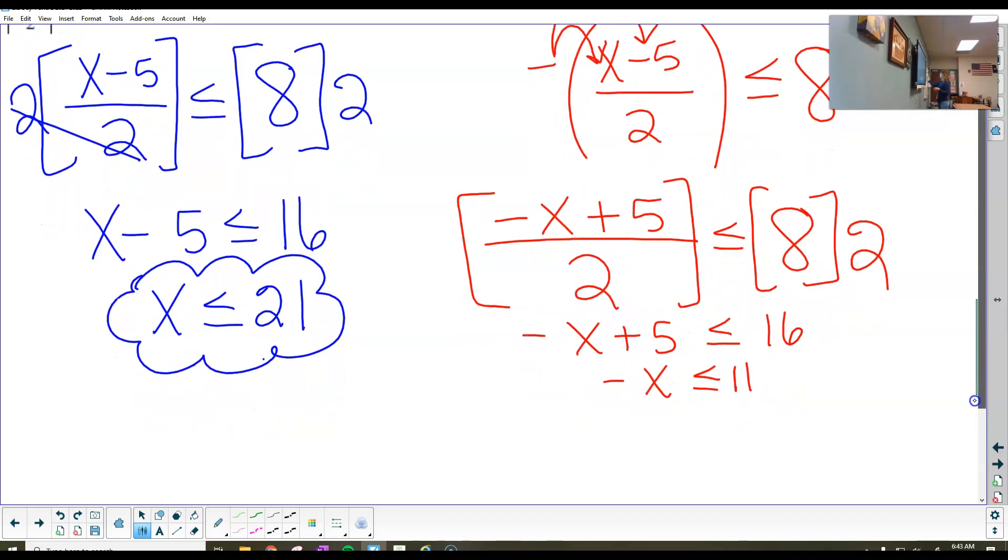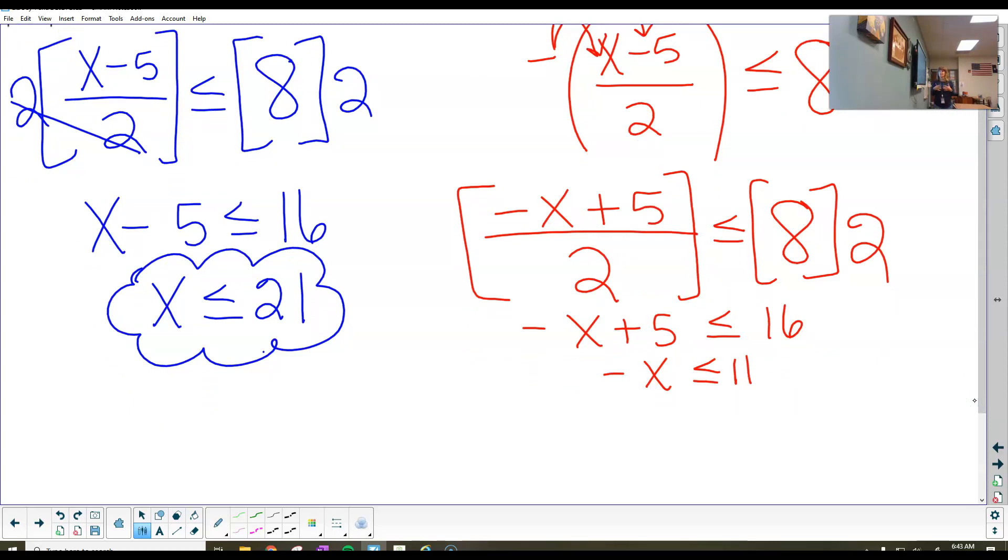And remember, I do not solve negative variables with inequalities. So that negative x and that 11, those are going to switch sides. So my 11 is now negative over here. My x is now positive, and then I am done solving this inequality.